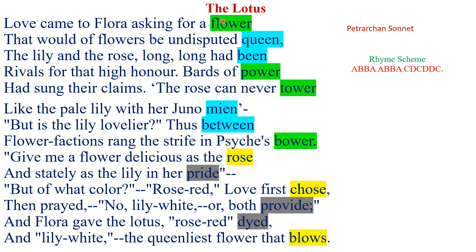The Lotus is a Petrarchan sonnet. A sonnet is a poem of 14 lines. The poem is divided into 2 parts: the Octave of 8 lines and the Sestet of 6 lines.